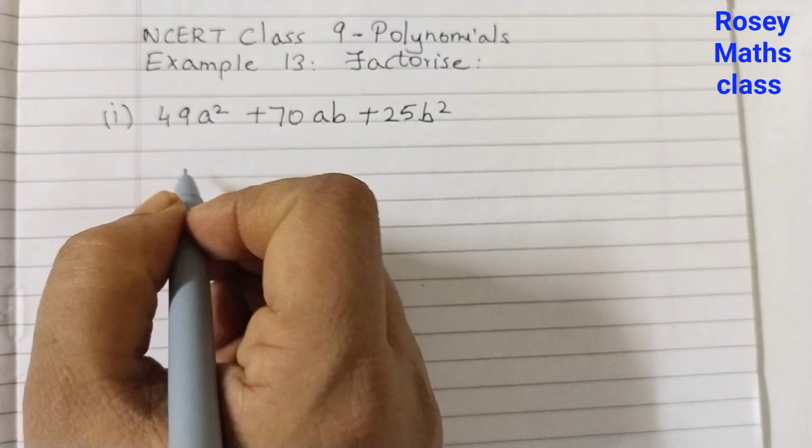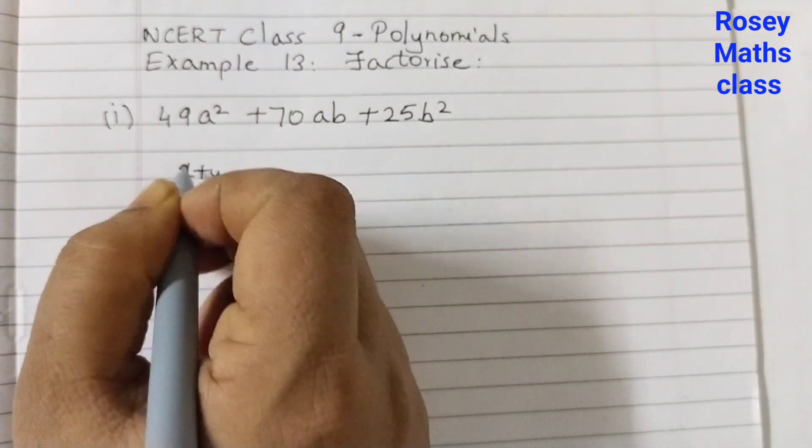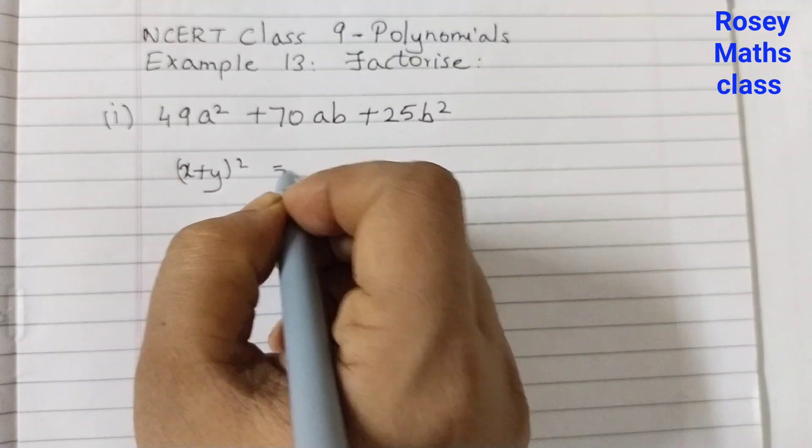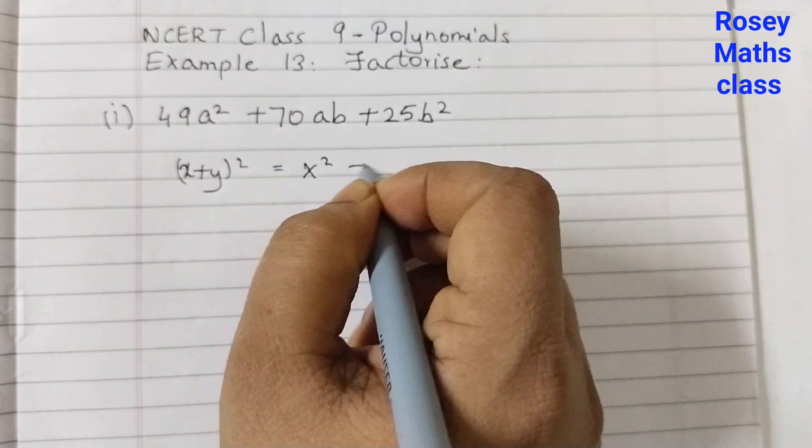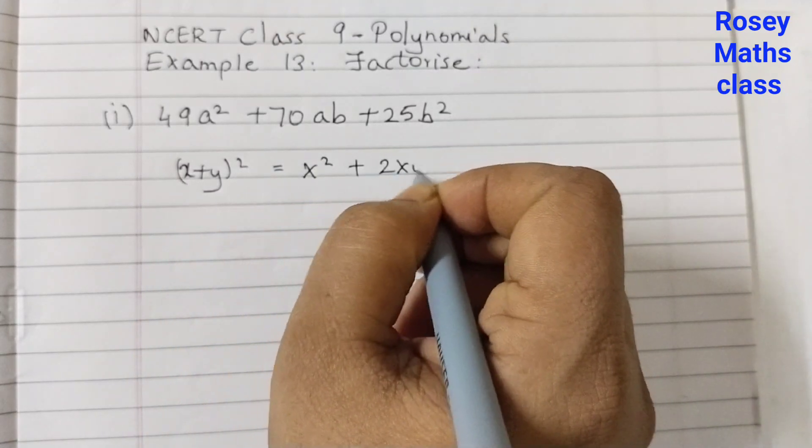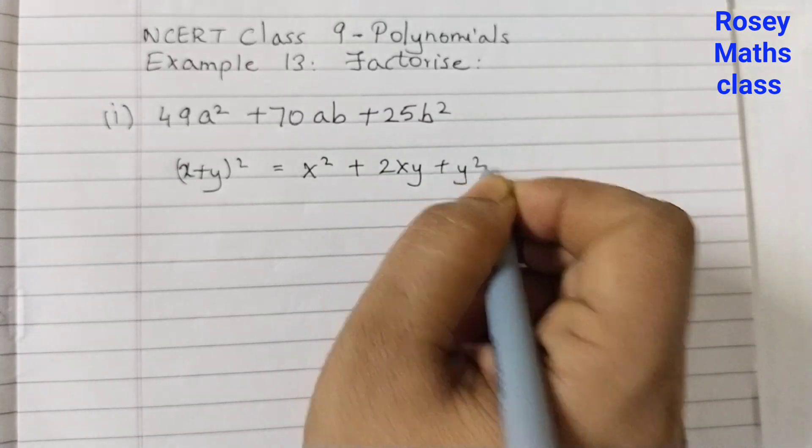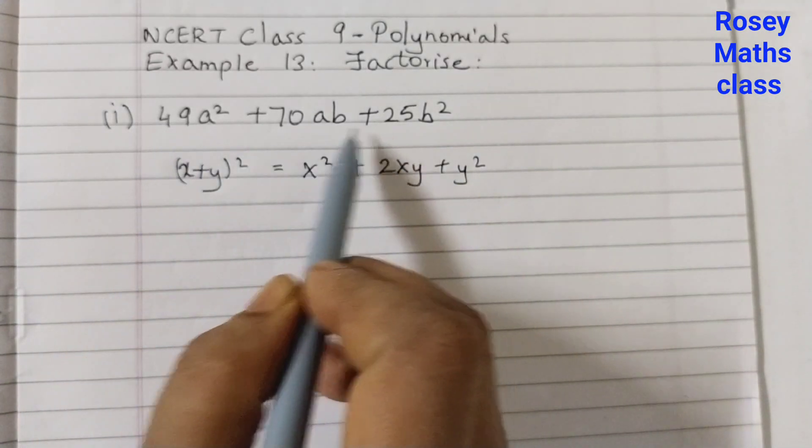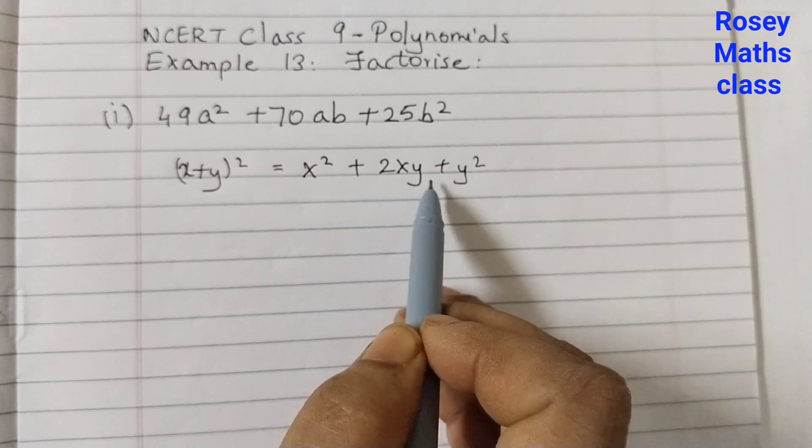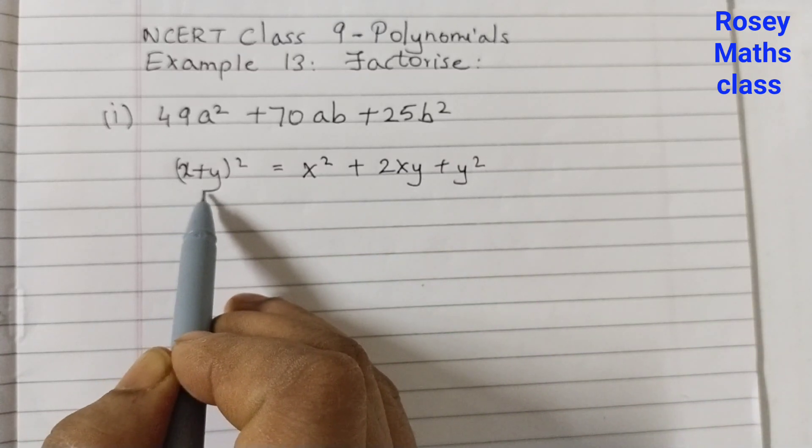So we got an identity which is x plus y squared is equal to x squared plus 2xy plus y squared. So now we need to rewrite this in this form so that this would be the factor.